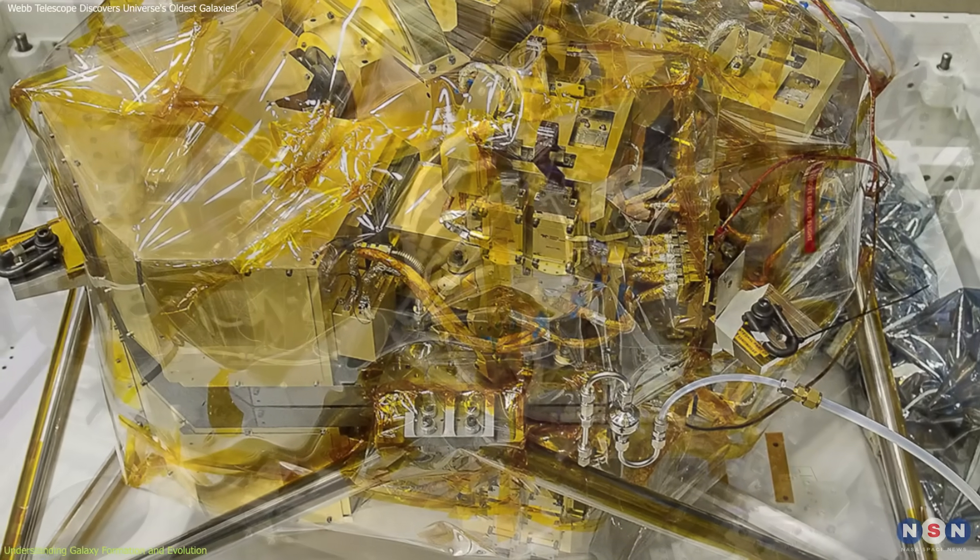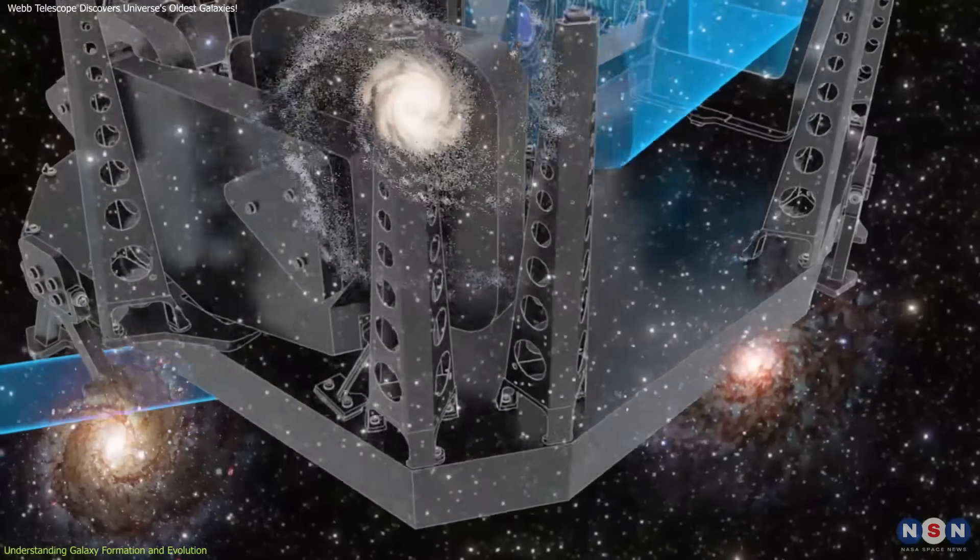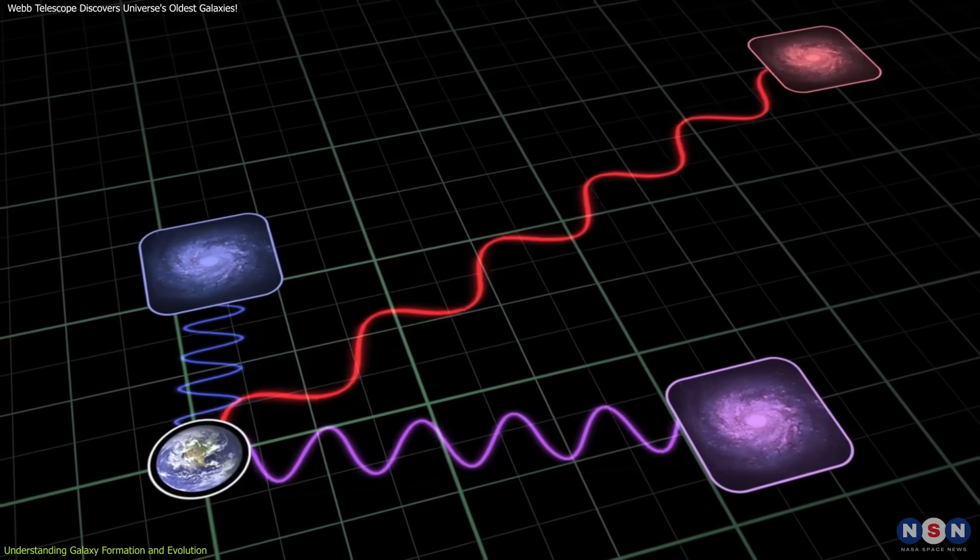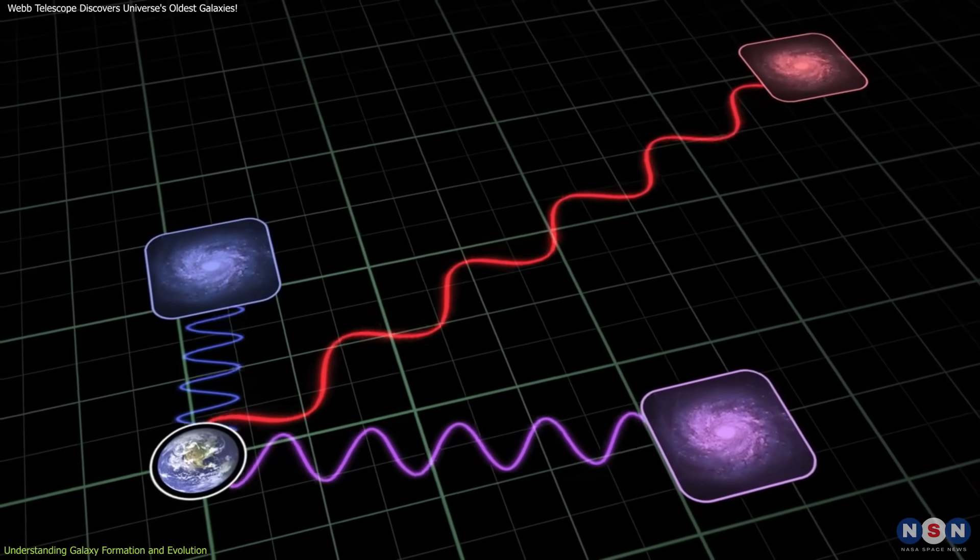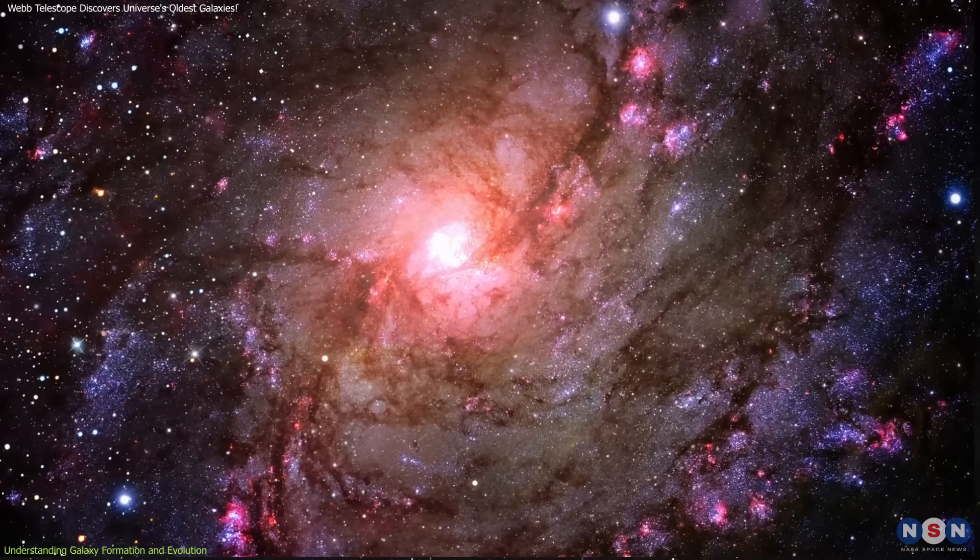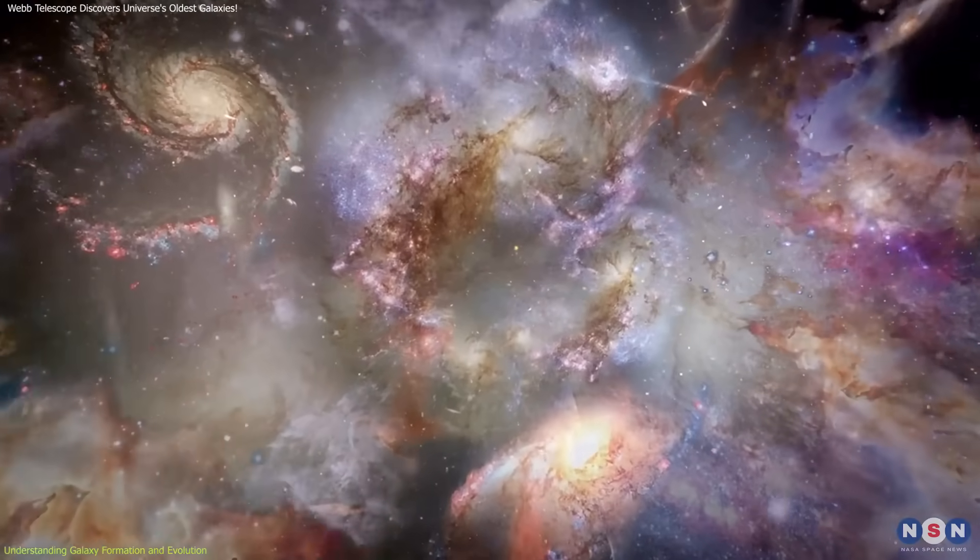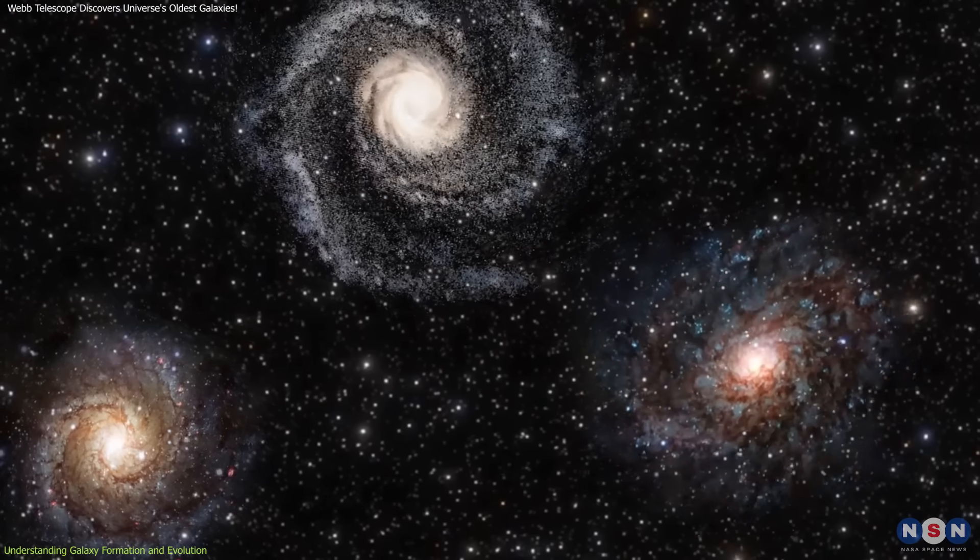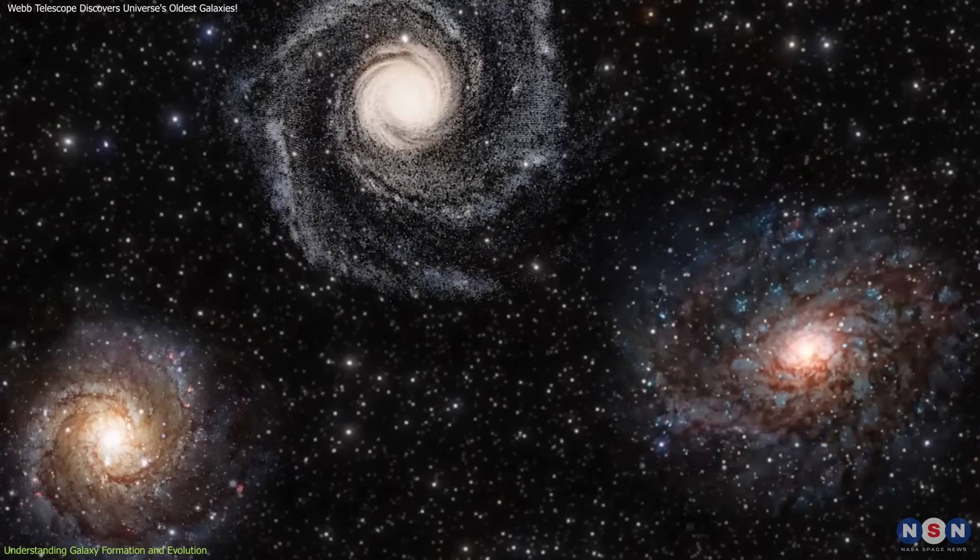Instruments like NIRCam and NIRSpec on Webb have been instrumental in observing these galaxies and measuring their redshifts, a method that confirms their distances from us and provides detailed insights into their properties.